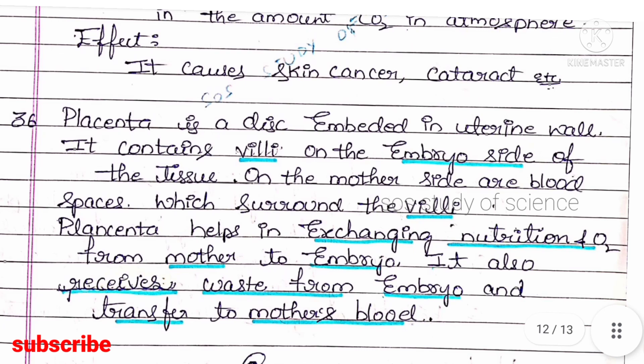Question 36: what is the placenta and what are its functions? The placenta is a disc embedded in the uterine wall. It contains villi on the embryo side; on the mother's side are blood spaces surrounded by villi. The placenta helps in exchanging nutrition and oxygen from the mother to the embryo, and also receives waste from the embryo and transfers it to the mother's blood for excretion.